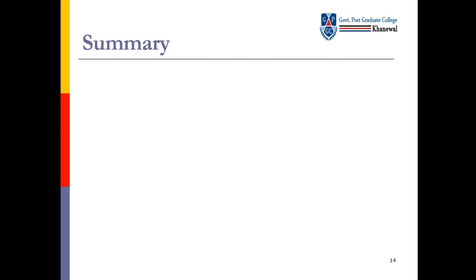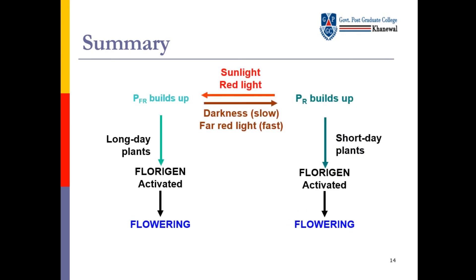Summary: دونوں آپس میں interrelate کر رہے ہیں. PFR build up ہوگا جب sunlight اور red light ہوگی — PR کی building کے لیے darkness اور far red light ضروری ہے. PFR build up کرے گا تو long day plants کے اندر florigen activate ہوگا اور flowering ہوگی. PR build up کرے گا تو short day plants کے اندر florigen activate کرے گا اور flowering ہوگی.